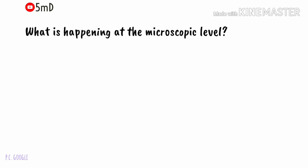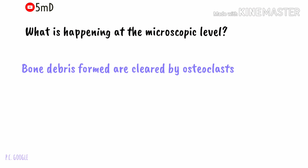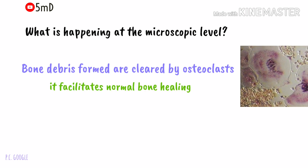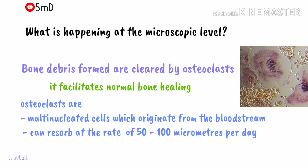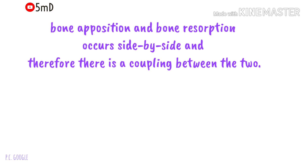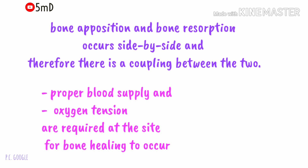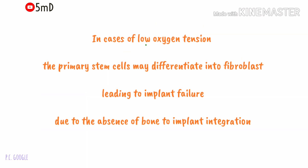Now let us look at what is happening at the site. Bone tissue damage and debris created by osteotomy site preparation must be cleared by osteoclasts for normal bone healing. These multinuclear cells originate from the blood and can resorb bone at a pace of 50 to 100 micrometers per day. Bone apposition and bone resorption usually occur side by side — there is a coupling between them. A proper vascular supply and oxygen tension are needed for this coupling. If oxygen tension is poor, the primary stem cells may differentiate into fibroblasts, form scar tissue, and may lead to implant failure — that is, non-integration.